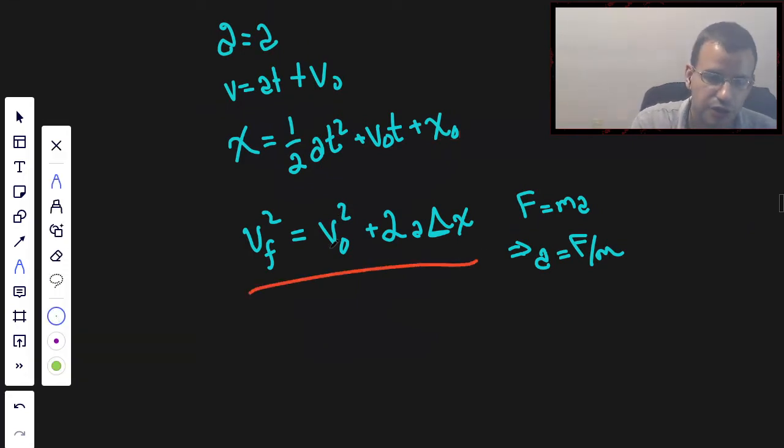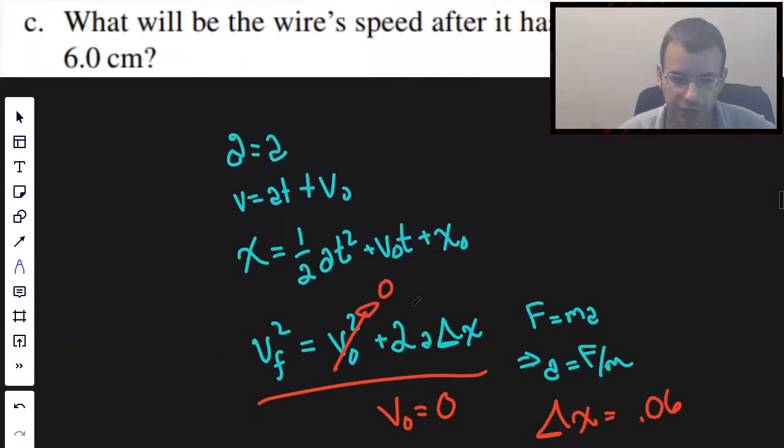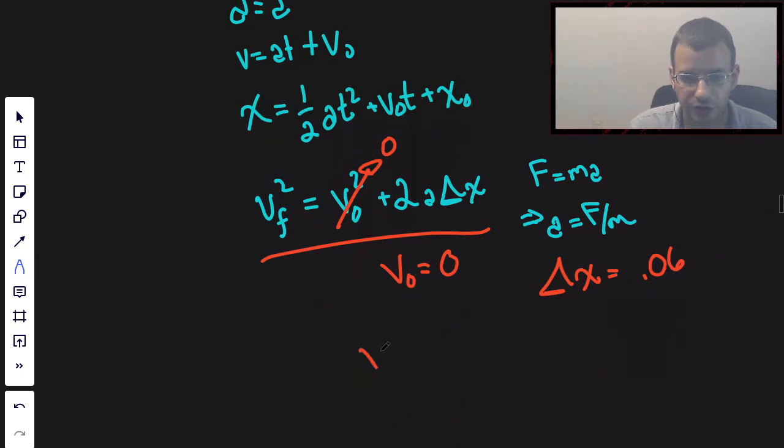So, this is the equation we're going to use. Initial velocity is going to be zero. Delta X equals 0.06 because it slid 0.06 centimeters. And so, velocity final squared is going to be 2 times F over M times delta X.